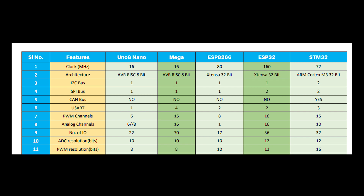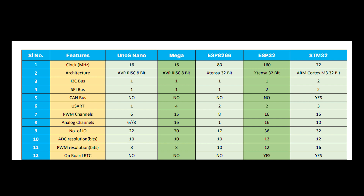For PWM resolution: Uno, Nano, and Mega have 8-bit PWM resolution. ESP8266 has 10-bit, ESP32 has 12-bit, and STM32 has a resolution of 16-bit in its PWM channels.